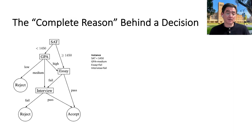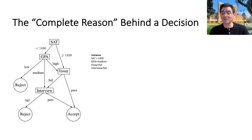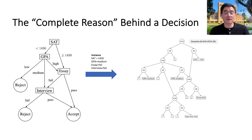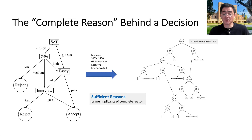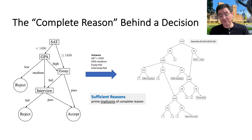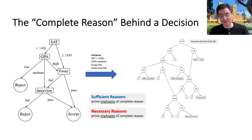A central notion to our approach is the complete reason behind a decision, which is more general than necessary and sufficient reasons, and is used to compute both. Given a classifier and an instance, this is a Boolean formula — expressed as a circuit — called the complete reason, introduced in 2020 at IJCAI. If you have the complete reason, you can compute sufficient reasons by computing the prime implicants of the complete reason. What we show in this paper is that the prime implicates of the complete reason give you the necessary reasons. So once you have the complete reason, you can compute either sufficient or necessary reasons from it.